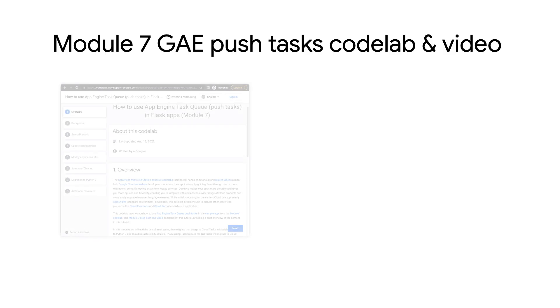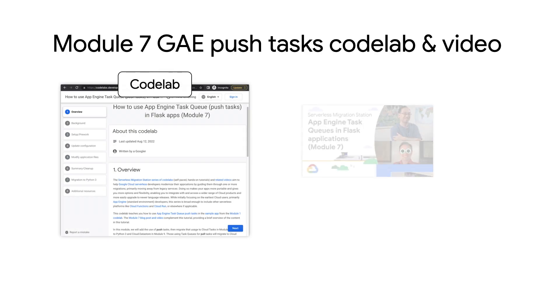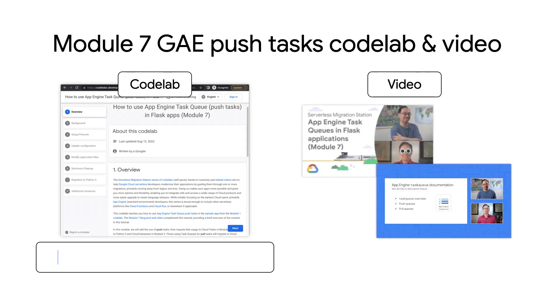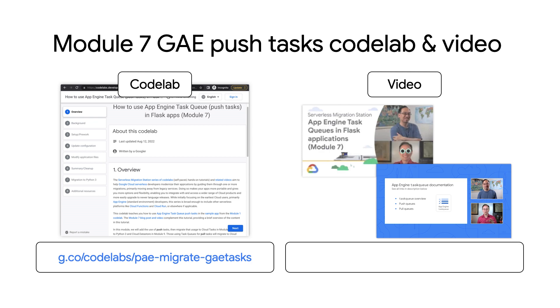App Engine has push queues too, right? I'm familiar with using push tasks to do extra work alongside my apps. Yep, and module 7 covers how to use push queues, so check that video and Codelab to learn that. Today we're focused on pull queue migration.